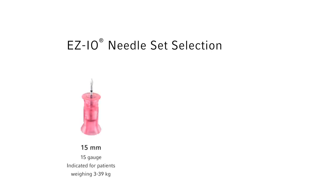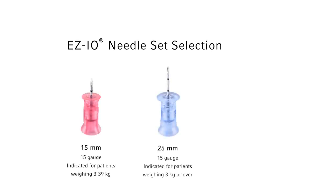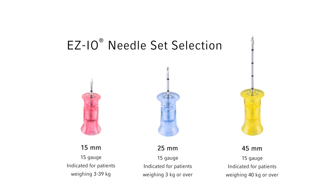Critical judgment should be used to determine appropriate needle set selection based on patient weight, anatomy, and tissue depth overlying the insertion site. To facilitate selection of the correct length needle set, tissue depth over the insertion site should be assessed prior to selection of the needle set.